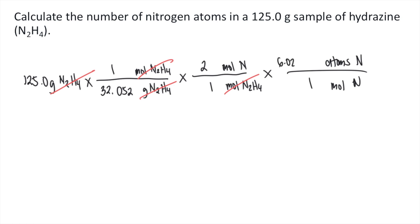there are 6.022 times 10 to the 23rd power atoms. So the moles will cancel out, and this will give you the atoms of nitrogen.